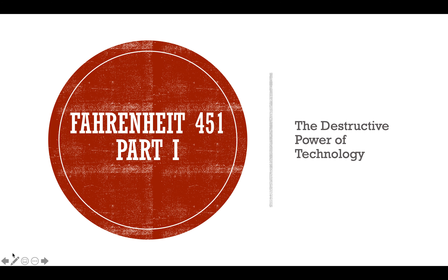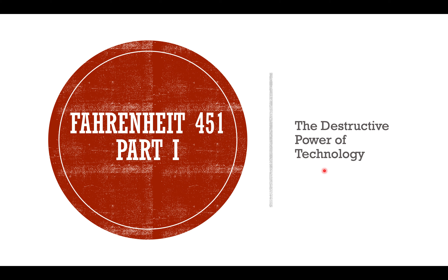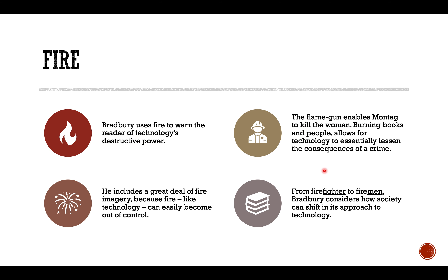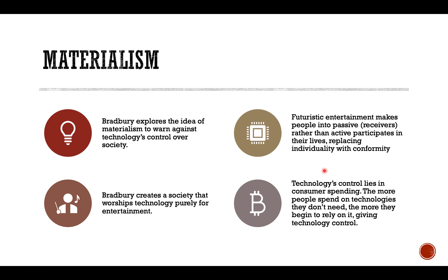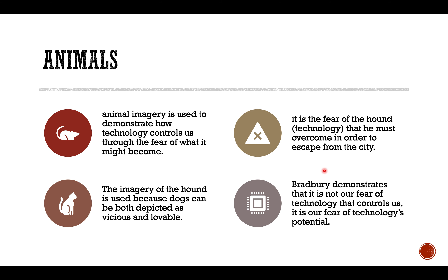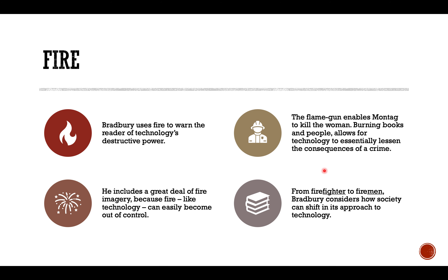Fahrenheit 451, Part 1 — specifically the destructive power of technology. Let's get started. We'll talk about three elements primarily: fire, materialism, and animals.